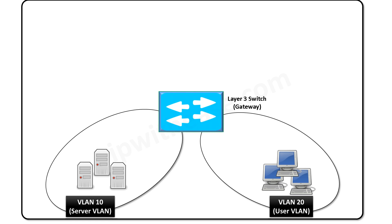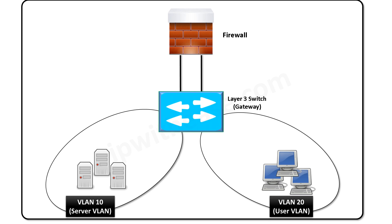The gateway or SVI for these two VLANs are created on the layer 3 switch. As part of a security requirement, we have attached a new firewall to the layer 3 switch. Any communication between these two VLANs should happen through the firewall. However, since the SVIs for both VLANs are created on the same layer 3 switch, any traffic originating from one VLAN will be directly routed by the switch to the other VLAN, since the VLAN subnets are directly connected.